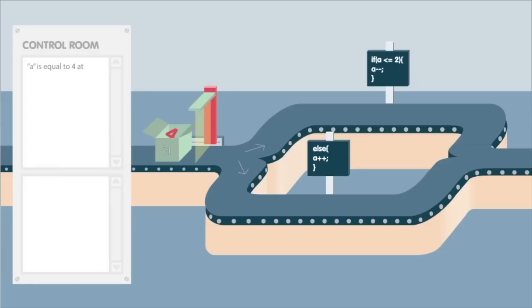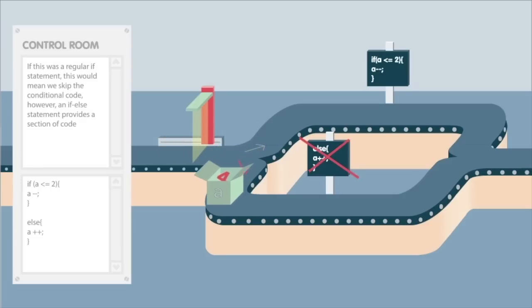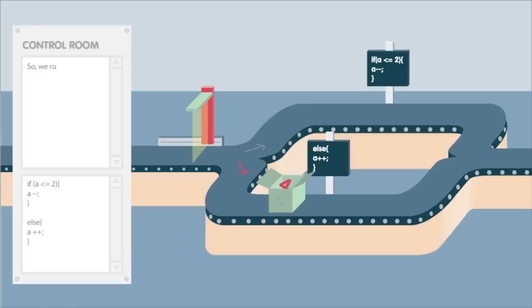A is equal to 4 at the moment, so we do not meet the conditions and are sent down path 2. If this was a regular if statement, this would mean we skip the conditional code. However, an if-else statement provides a section of code to run for a false outcome as well as a true outcome. And so we run the false outcome code, the code reaches A equals A plus 1, and A is incremented once, becoming 5.